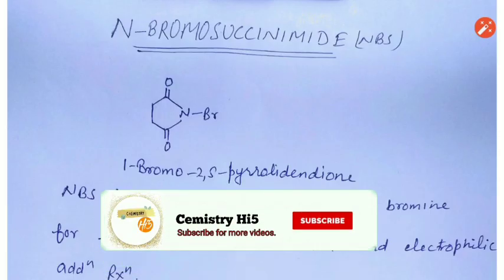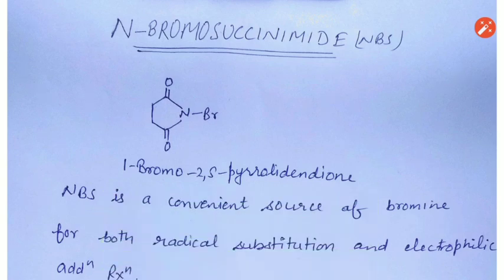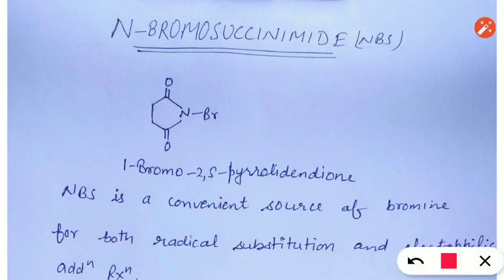Hello students, welcome to Chemistry Hi-Fi YouTube channel. I am Sarita, your chemistry teacher. Today we will study a very important organic chemistry reagent: N-Bromosuccinimide, whose structural formula is written here, and its IUPAC nomenclature is 1-bromo-2,5-pyrrolidine-dione.